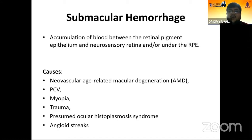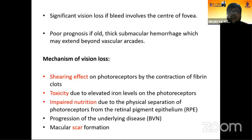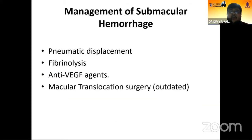As we all know, submacular hemorrhage is accumulation of blood between the RPE and the neurosensory retina. It can be due to various causes such as AMD, polypoid choroidal vasculopathy, myopia, trauma, or angioid streaks. It has poor prognosis if not dealt with in time. The mechanism of visual loss is essentially a shearing effect on photoreceptors, toxicity due to elevated iron levels, and scarring. Various techniques exist in the literature for management, such as pneumatic displacement, fibrinolysis, anti-VEGF, and surgeries.